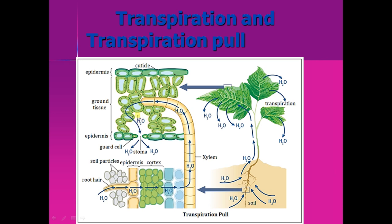Transpiration pull helps in the conduction of water from the root to the leaves — but how? Through a pull, called the transpiration pull. Consider a cell from which water evaporates into the intercellular spaces and comes out, making that cell deficient in water. This cell then drags water from the adjacent cell, and that from the next, and finally from the xylem. The xylem drags water from below, and this deficiency travels all the way down to the root hairs.